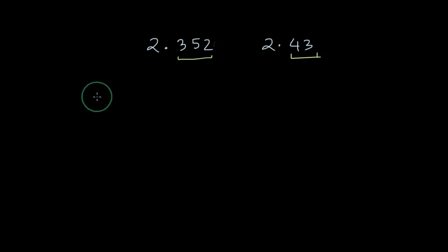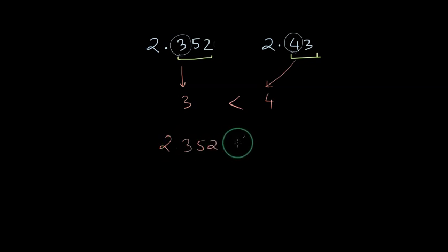What you need to do is only look at the immediately next number after the decimal point first. Here it is 3 and here it is 4, and 4 is larger than 3, so 2.352 is less than 2.43. Just to get the idea, 2.43 can also be written as 2.430 and on the left hand side you will see 2.352.